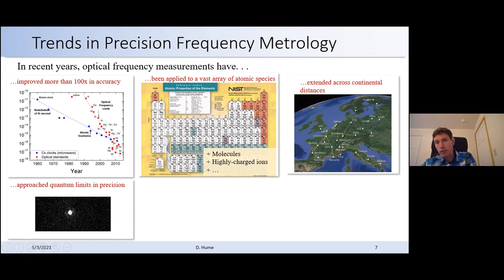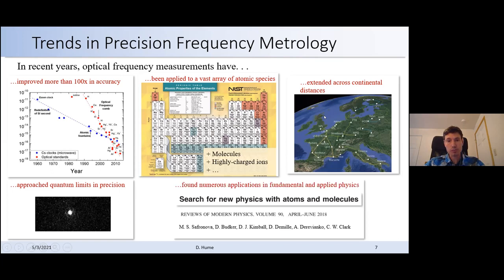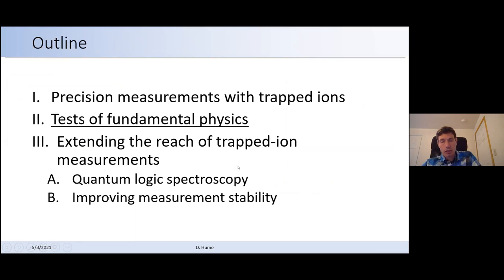These measurements are starting to extend across continental distances. Notably in Europe, they've built a big network connecting metrology institutes and other institutions with ultra stable optical fiber links. So it's starting to, the size of the networks are starting to spread. And as we've discussed already, we're thinking about ways to make this bigger and even going to satellite based systems. And finally, the subject of this workshop is that these measurements have found numerous new applications in fundamental and applied physics, as evidenced by this review paper from Mariana and company from a few years ago. So there's just a whole lot going on. And hopefully, I'll touch on some of that here.